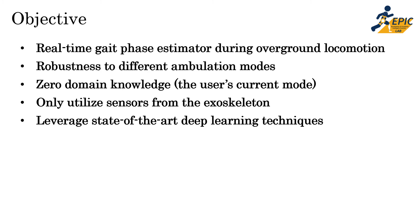With that, we identified a clear gap in the field: the need to develop a real-time gait phase estimator capable of estimating the user's gait phase during multimodal overground locomotion. We wanted to develop a model that does not require any additional domain knowledge such as the user's current ambulation mode, and that can utilize sensor information native to the exoskeleton device. To do this, we leveraged state-of-the-art deep learning techniques to extract additional feature information from raw sensor data that typical machine learning models cannot.